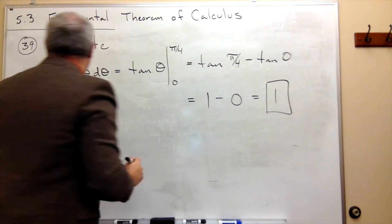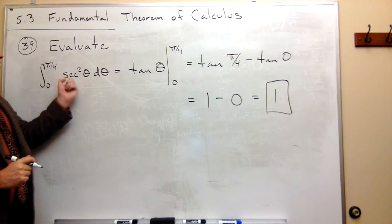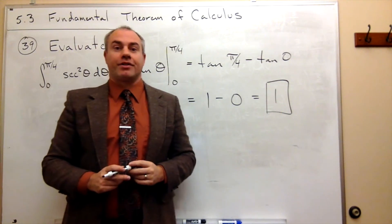So the definite integral from 0 to π over 4 of secant squared of theta d theta is just 1 using the Fundamental Theorem.